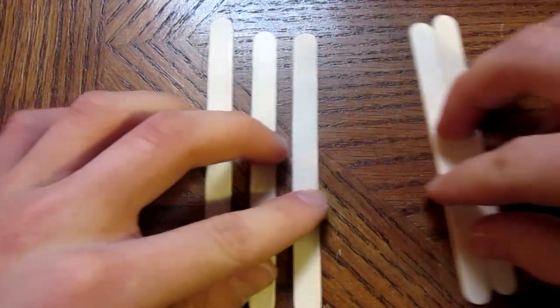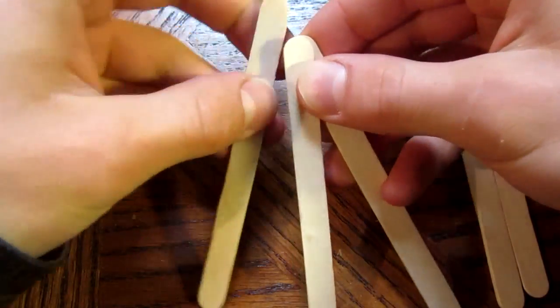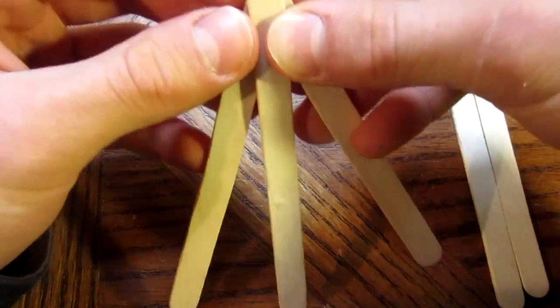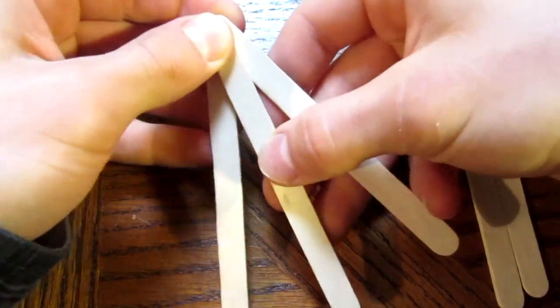You need five popsicle sticks. First, take three and place them just like this, all together making a triangle shape, making sure the middle one is on top. Then pinch it right there with your fingers.